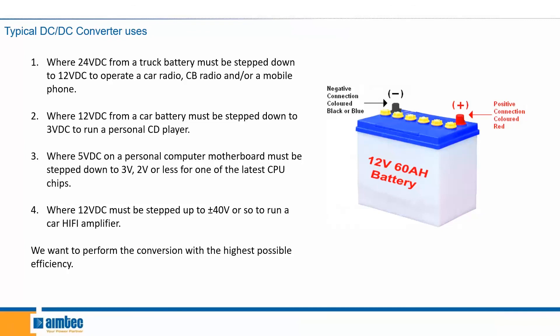Typical DC to DC converter uses include the following. First, a 24-volt battery from a truck that needs to be stepped down to 12 volts to operate a car radio. Next, 12 volts from a car battery stepped down to 3 volts for a personal CD player. After that, 5 volts coming in that needs to be stepped down to 2 or 3 volts for a CPU. And finally, 12 volts that need to be stepped up to plus or minus 40 volts to run a hi-fi amplifier.